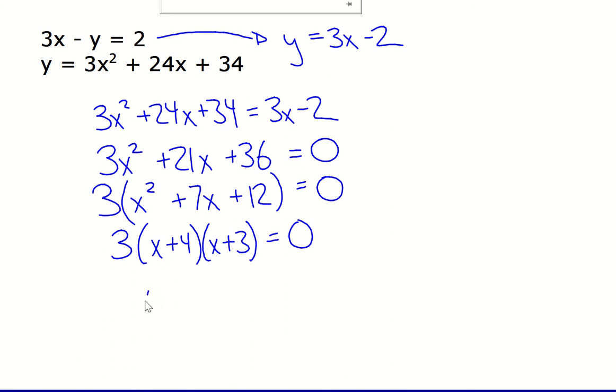However, I can set the other two factors equal to 0. So if x plus 4 equals 0, then that means that x would equal negative 4. And if x plus 3 equals 0, then x would equal negative 3.